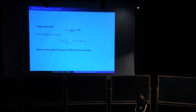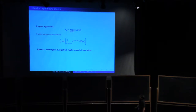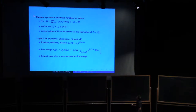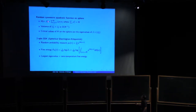We did not know about spin glass at the time we started this project, and later we learned that this is exactly what is called the spherical Sherrington-Kirkpatrick (SSK) model in spin glass. So think about the random symmetric quadratic function on the sphere — here I use the sphere of norm sqrt(n). J is a random symmetric matrix J_{ij}, and as a function of sigma on the sphere, think about this quadratic function.